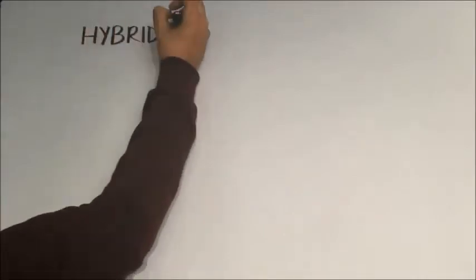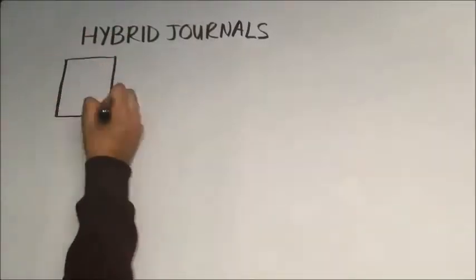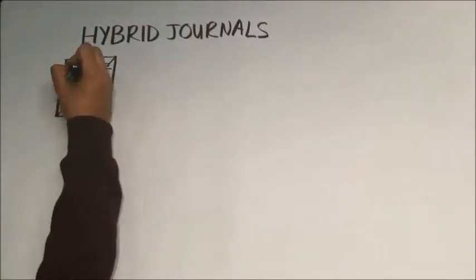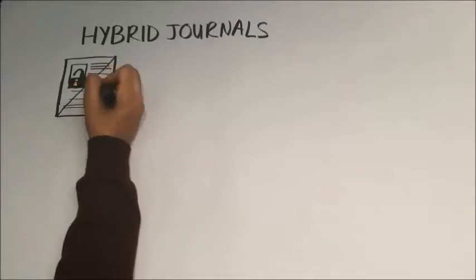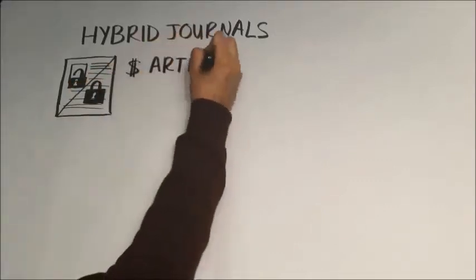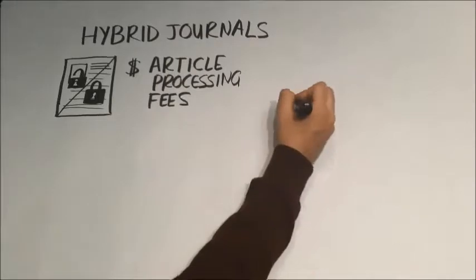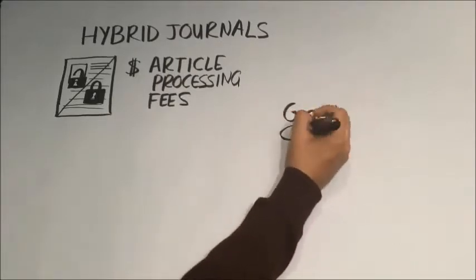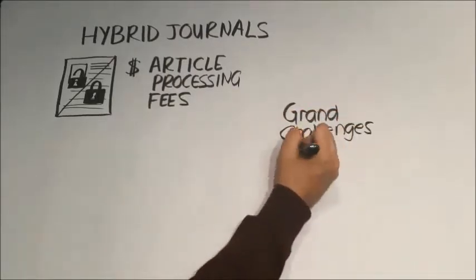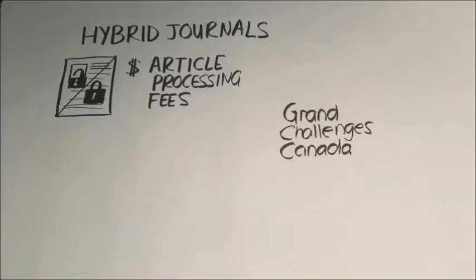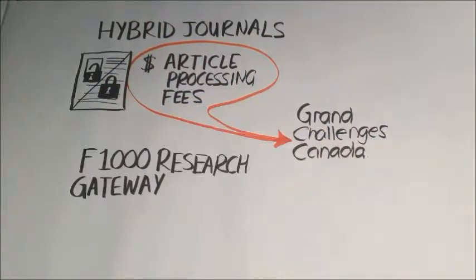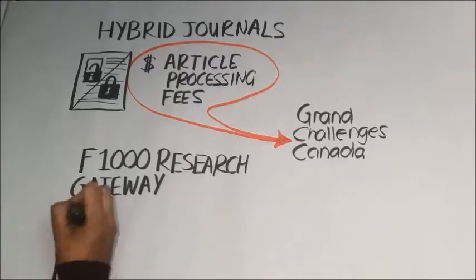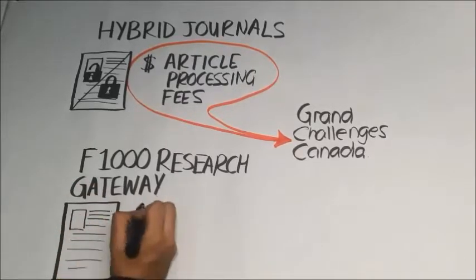GCC innovators who intend to publish in hybrid journals during the term of their projects may be able to include anticipated costs of open access publishing in their proposed project budgets and should speak with their GCC program coordinators for more information. Where publication will not occur until after project completion, GCC may be able to offer supplements to cover article processing fees, depending on the availability of funds at that time. Another option is to publish for free through GCC's F1000 Research Gateway, which we will introduce later in this video.